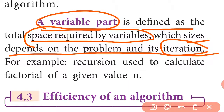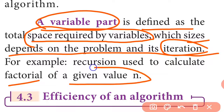For example, recursion used to calculate the factorial of a given value N is an example of the variable part, as the space depends on the depth of recursion.